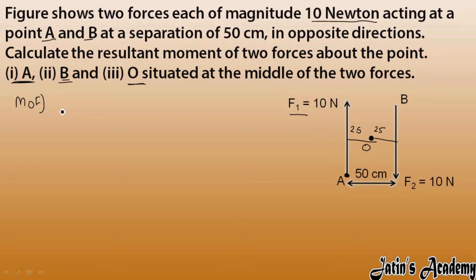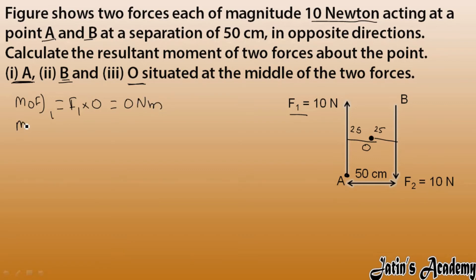Moment of force due to F1 equals F1 multiplied by the perpendicular distance from the hinge point. Carefully, this is the force, this is the line of action of force, and the fixed point A lies on the line of action of force. So the perpendicular distance is zero, giving zero Newton meters.